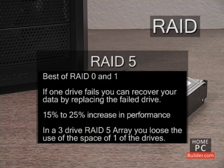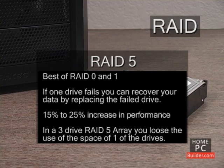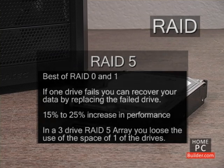RAID 5 combines the striping of RAID 0 with the built-in backup of RAID 1. Three or more hard drives in a RAID 5 array keep usable data on two-thirds of the drives' combined space, with one-third used as redundant or parity data. If one hard drive dies, it can be replaced and the remaining data on the other drives is used to recreate the missing data, restoring the array to full working state with no data loss. The performance increase over single drives is between 15 and 25%.